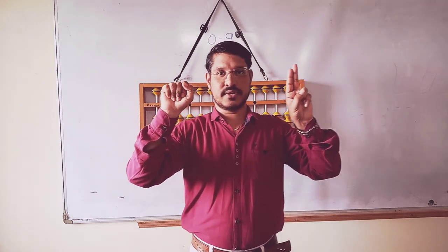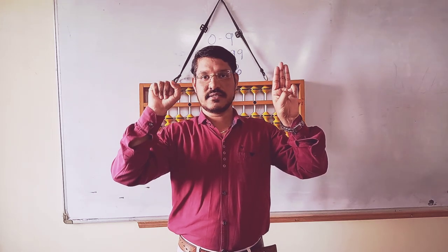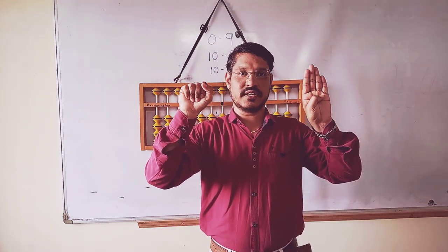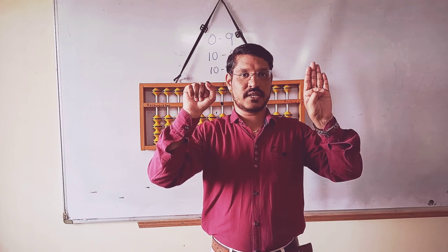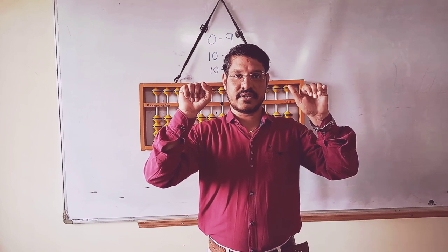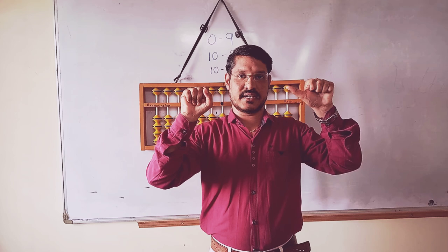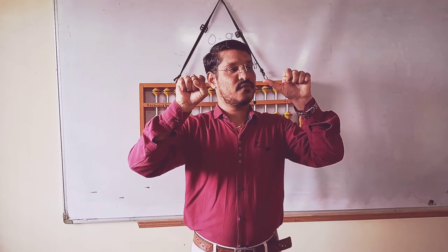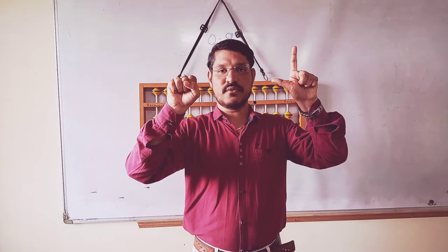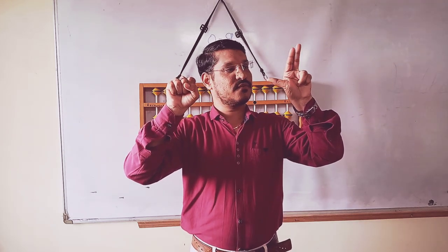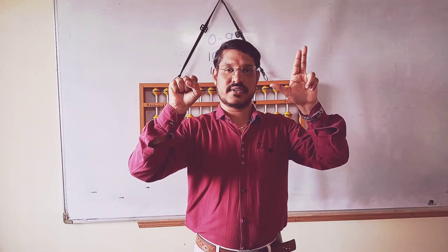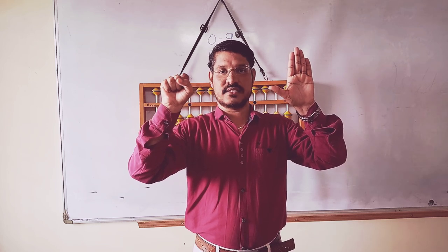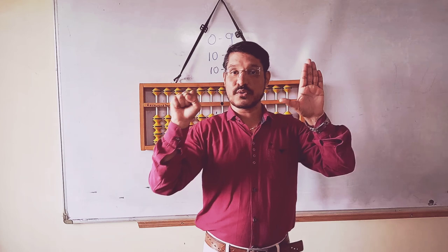It's 2, 0, 20. It's 3, 0, 30. 4, 0, 40. Again for the 50 point of view, better to close all the left hand fingers and open only thumb finger. That is 5, 0, 50. 6, 0, 60. 7, 0, 70. 8, 0, 80. 9, 0, 90.